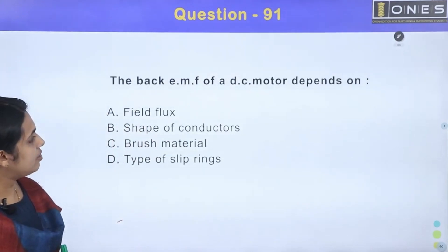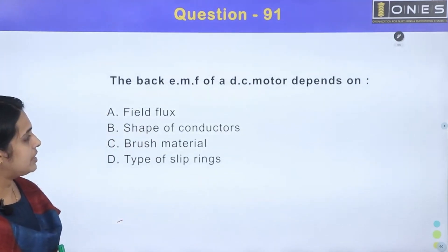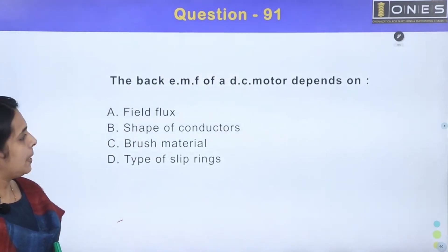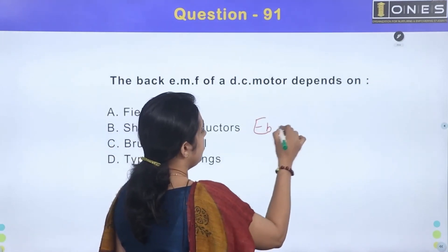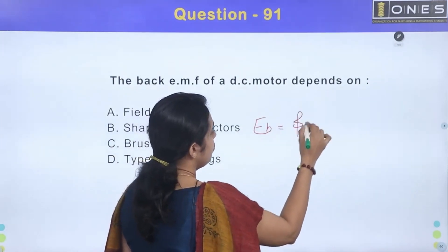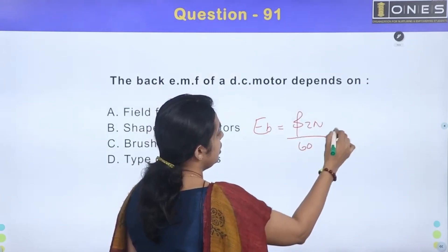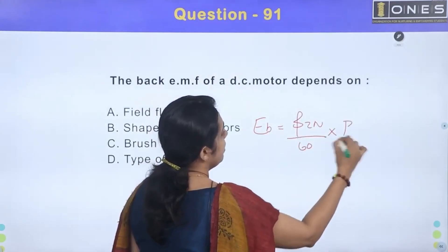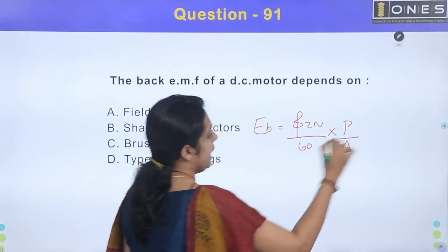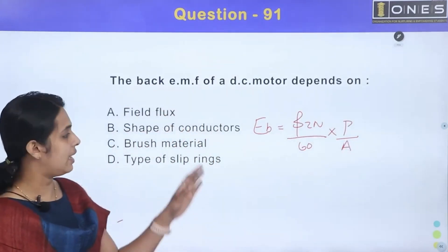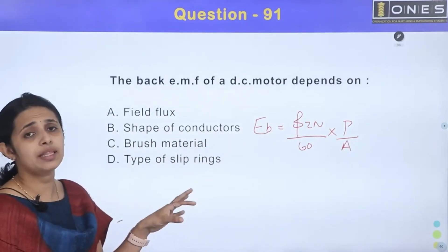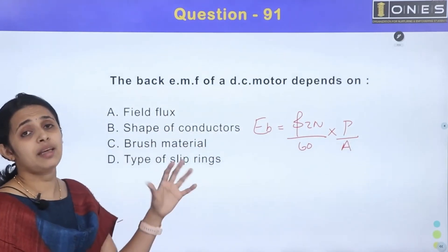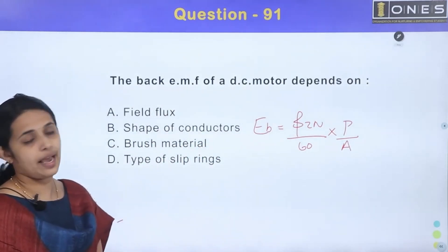The back EMF of a DC motor depends upon — back EMF. In the expression, back EMF is equal to 57 divided by 60, into P divided by A, and one motor inducing. Back EMF in the equation: back EMF is equal to supply voltage in the opposite direction.